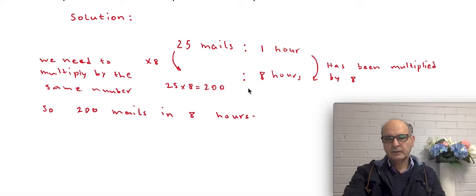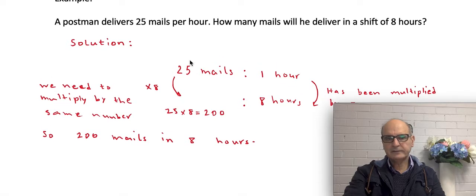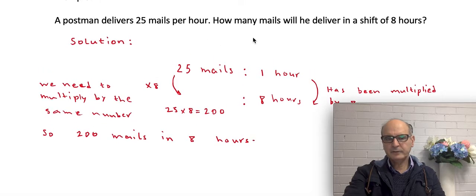So basically what we've done, we times the number of rate, the number that we have in the rate, which was 25 per hour, 25 mails per hour. That is the rate. We times it by the value of the second quantity. The first quantity is mail, as we said, the second quantity is hour. And the second quantity is now 8.